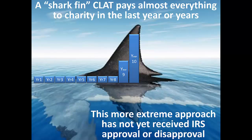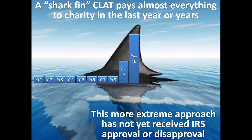The more extreme version of keeping assets inside the charitable lead annuity trust is known as a "shark fin" charitable lead annuity trust. The name comes from a visualization of the payment amounts on a graph where the large charitable payments all come in the last year or two of the trust, forming a steep shark fin-like graph. The benefit to such a payout scheme is the same as with a STEP CLAT: the longer the assets are kept inside the charitable lead trust, the more excess growth they will be able to generate, assuming that they outperform the Section 7520 rate.